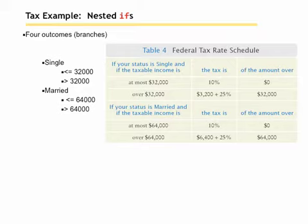Here are some other examples of nested ifs given a federal tax rate schedule. If the status is single and if the taxable income is at most $32,000, then the tax rate is 10% of the amount over 0%, so 10% on everything. If their status is single and if the taxable income is greater than $32,000,